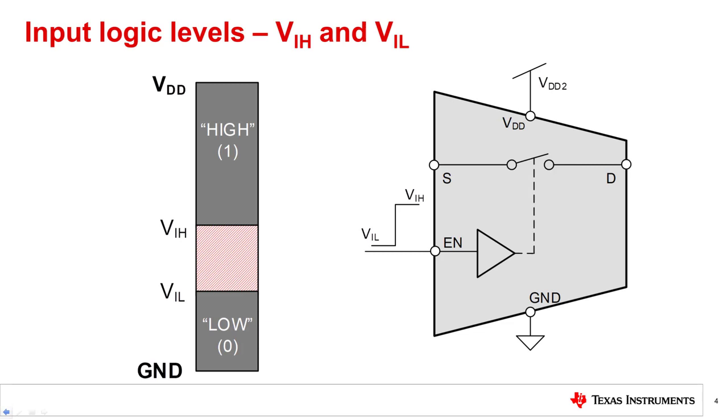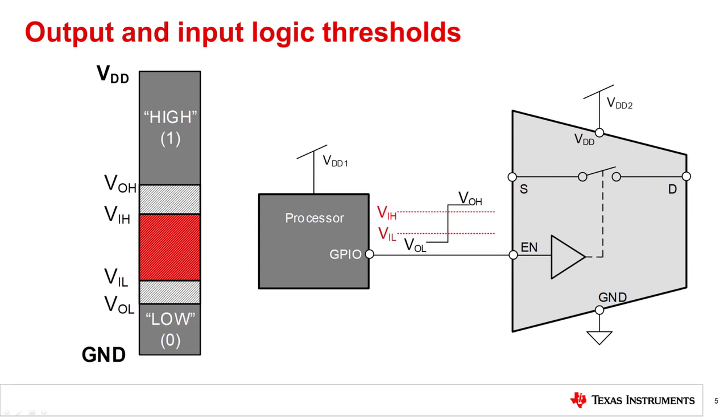Based on the input signal, the internal logic controls which internal signal paths are on, off, or selected. When designing your system, it is important to consider both the output thresholds of your driver and the input thresholds of your switch. To ensure that the driver's output signal will effectively control the switch, you must be certain that the VOH is above the VIH, and that the VOL is below the VIL.